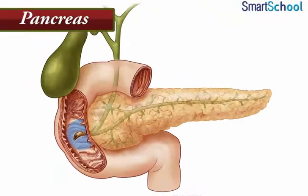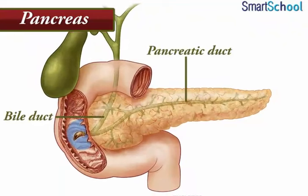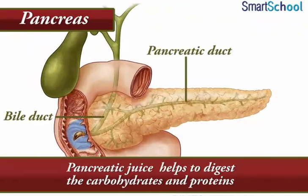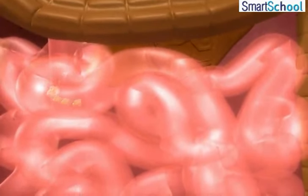The pancreas has a narrow tube which joins the bile duct; this tube is called the pancreatic duct. The pancreas secretes the pancreatic juice that helps to digest the carbohydrates and proteins. The food then reaches the lower part of the small intestine.